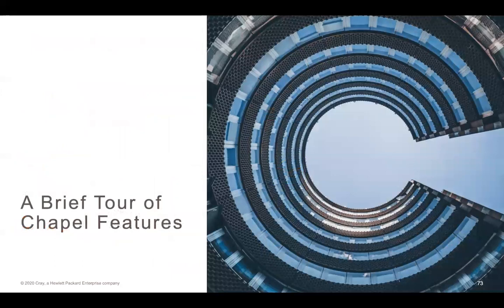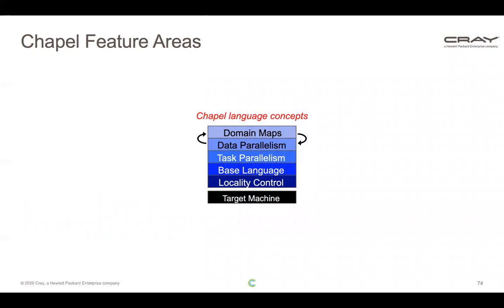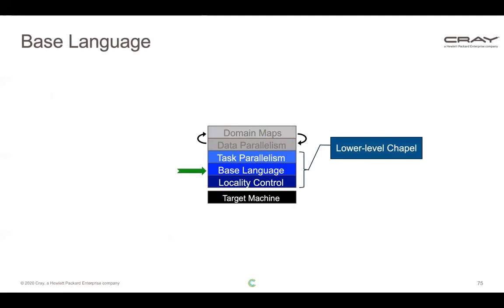Now I want to talk about some of Chapel's features, illustrated through simple sample programs. This is a high-level introduction — there's a lot more detail we could go into, but today I just want to give you enough context to understand talks you might hear at CHIUW later this week. I think of Chapel's language features as separating into five little rectangles — some lower level and closer to the target machine, others higher level — though even the low-level features are reasonably high-level compared to standard parallel programming practice.